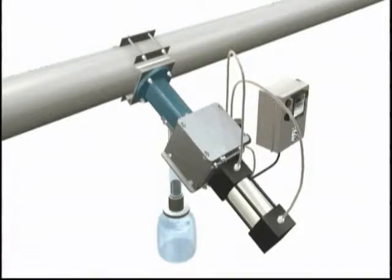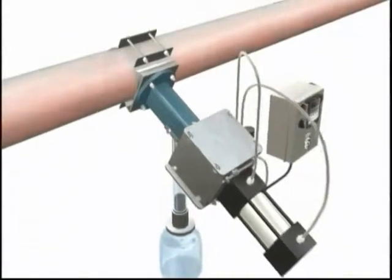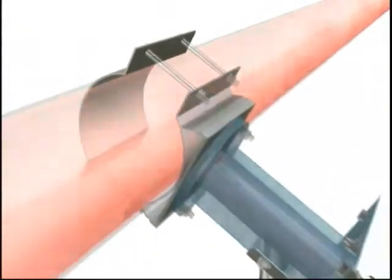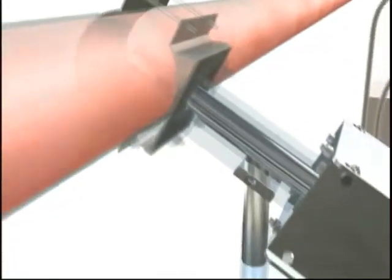The Model PR sampler utilizes a reciprocating probe that is traversed in the material flow stream by a solenoid-controlled air cylinder.